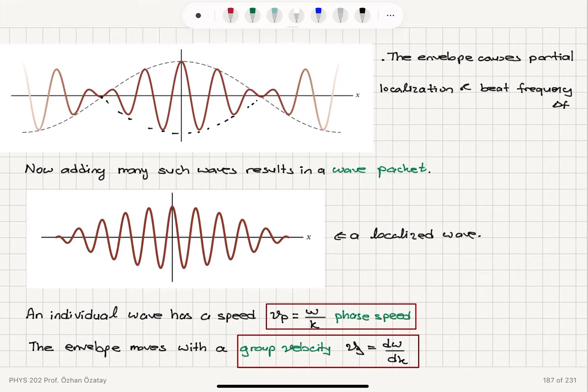That's called the phase speed. The envelope moves with a group velocity which is d omega dk.